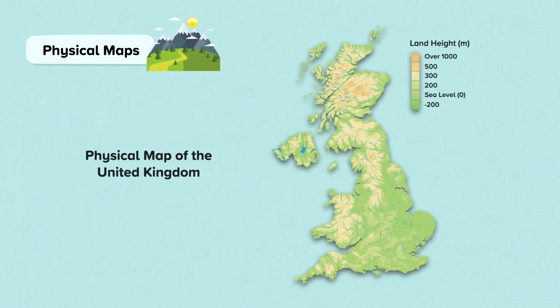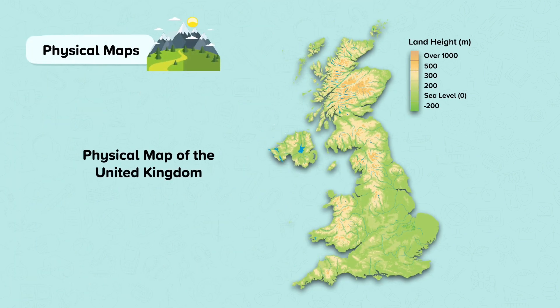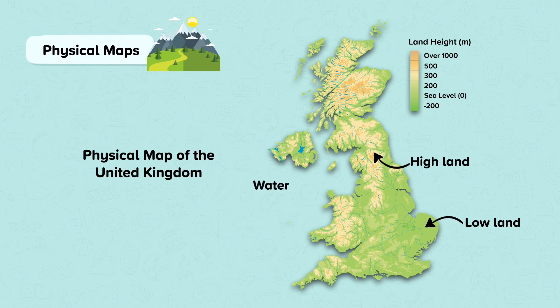Physical maps show the landscape's natural features, such as the land's height above sea level. Physical maps use colour to represent different features. For example, high land is shown in brown, low land in green and water in blue.